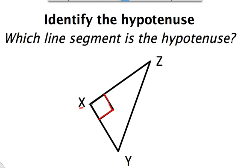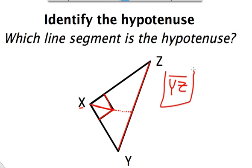Now if I take that right angle mark and I turn it into an arrow, that arrow points to my hypotenuse, which in this case is this line right here. So the answer is that line segment yz is my hypotenuse.